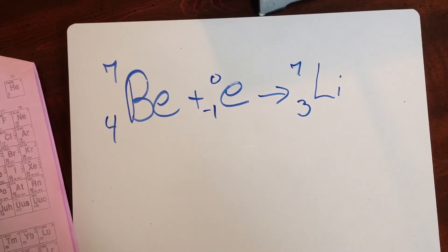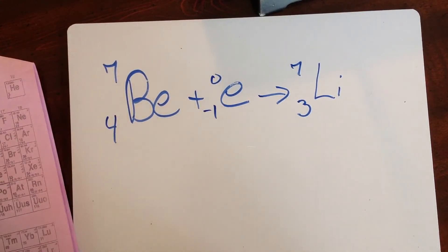So for any nuclear reaction, you need to make sure when you separate the reactants and the products, if you add up all the subscripts of the reactants, they have to equal the subscripts of all the products. If you add up all the superscripts of the reactants, they have to add up to the sum of all the superscripts of the products as well.